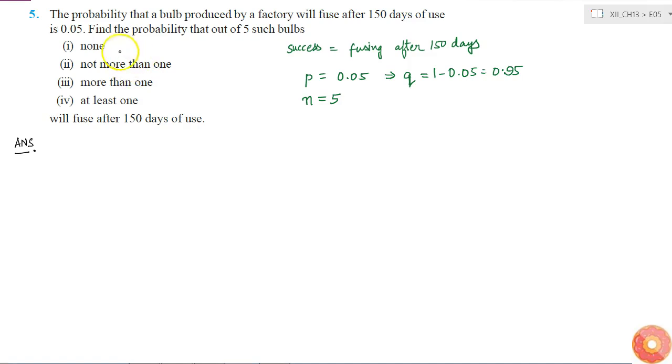So now to solve all these parts, I can use a binomial distribution. If I look at the first part, find the probability that out of 5 such bulbs, none will fuse after 150 days of use. That means I have to find the probability that none of them will fuse, that is x equal to 0.